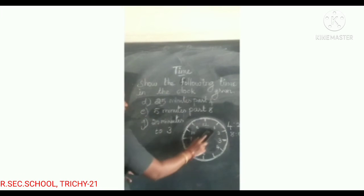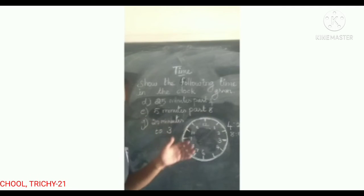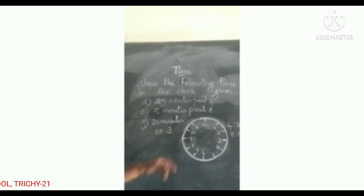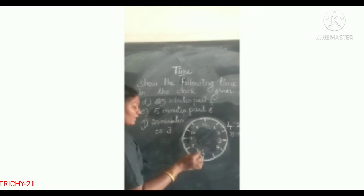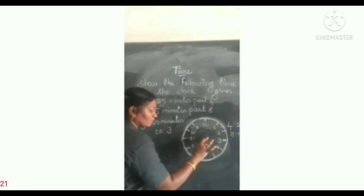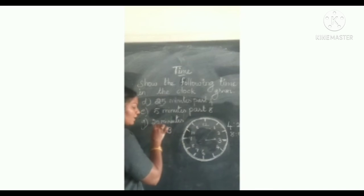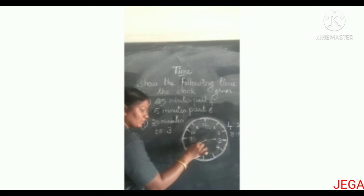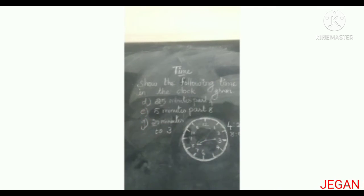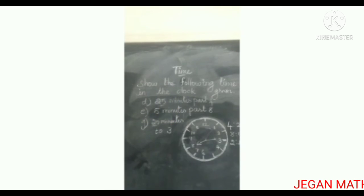Next: twenty minutes to three. Not three — this is twenty minutes before that. First draw the hour hand near the three. There are twenty minutes remaining. Reverse: five, ten, fifteen, twenty. So the time is two forty. Clear.